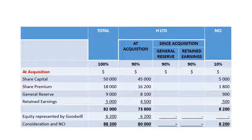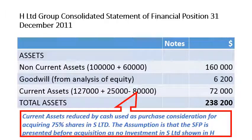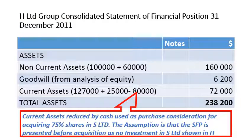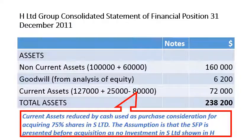Now let's draw up the consolidated statement of financial position for the H Limited Group as at 31 December 2011. For assets, we add the assets of H Limited and S Limited line by line — that is, line item by line item. This is the consolidation approach for subsidiaries.